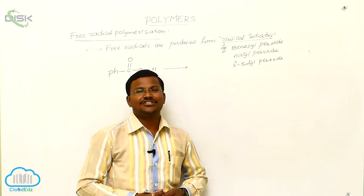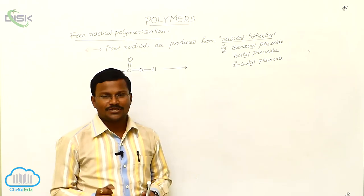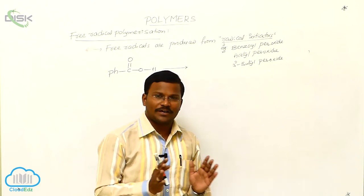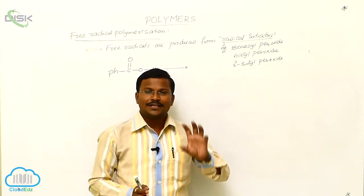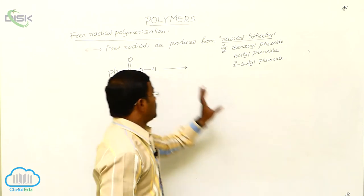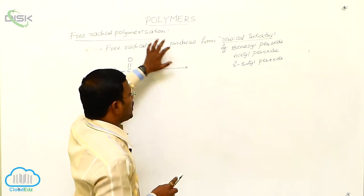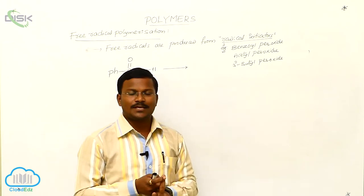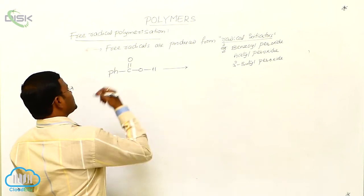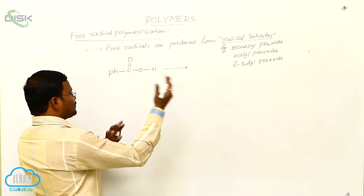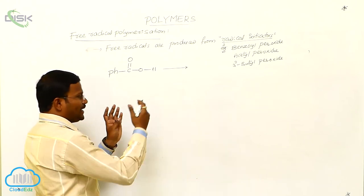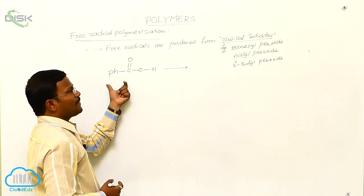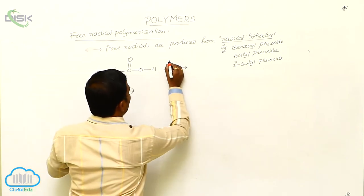The first step is initiation, the second step is propagation, and the third step is termination. Free radical polymerization is also a type of addition polymerization, and addition polymerizations are called chain growth polymerization. Hence, the three steps are called chain initiation step, chain propagation step, and chain termination step. Let us explain how the polymerization takes place to yield polythene from ethene using benzoyl peroxide as initiator in the presence of light.